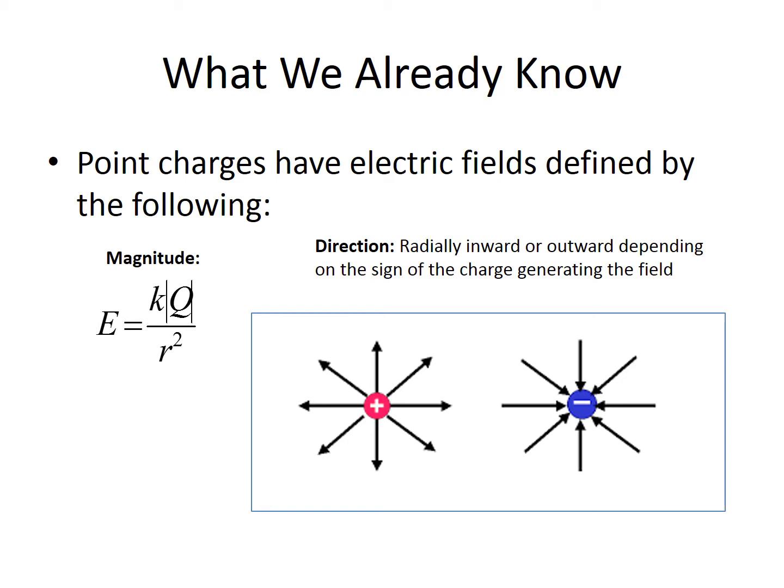So what do we already know? We know what electric fields look like and how to calculate them at points in space surrounding positive and negative point charges. For a positive point charge, field lines radiate outward; for a negative point charge, they radiate inward. Recall that we define field direction as what would happen to a small positive test charge placed in the area. We also know from Coulomb's law that the electric field is kq over r squared.